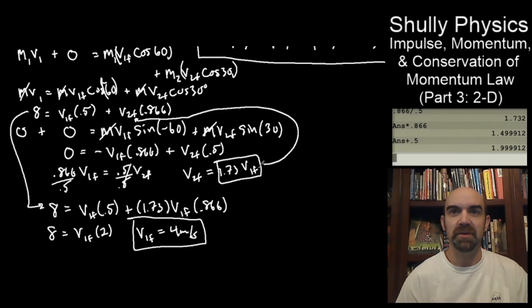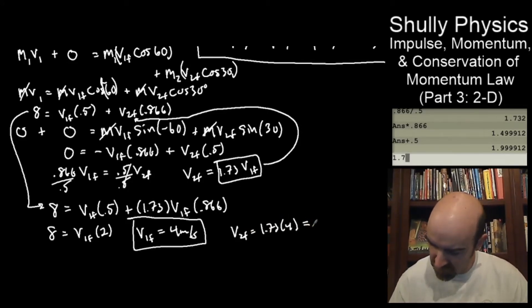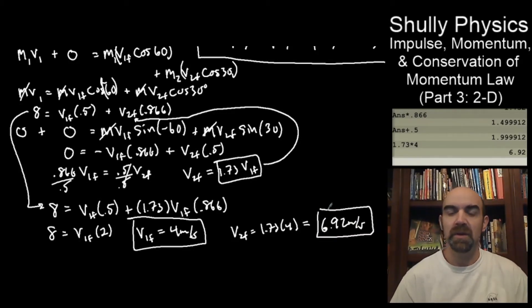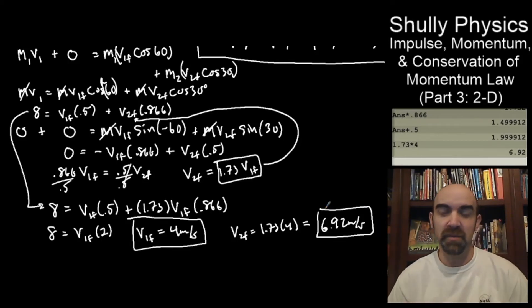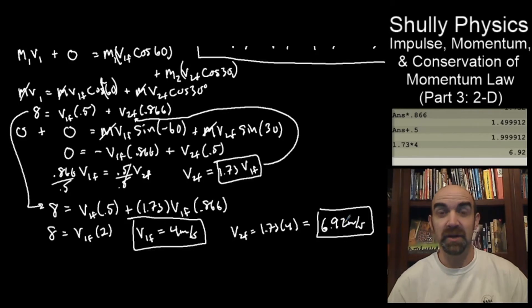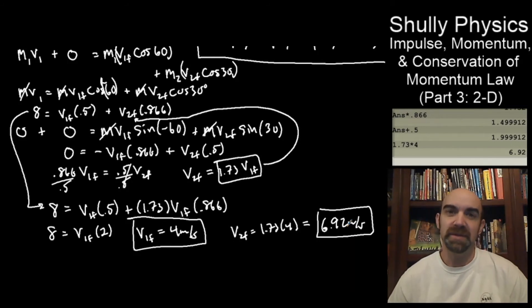Now we plug in to find v2 final: 1.73 times 4 gives us 6.92 meters per second. The cue ball gave some of its momentum to the three ball, so it slowed down — it's now at half the original speed. The three ball now has momentum in both the X and Y directions. They're both moving at less than 8 meters per second, each at some fraction of the original speed.